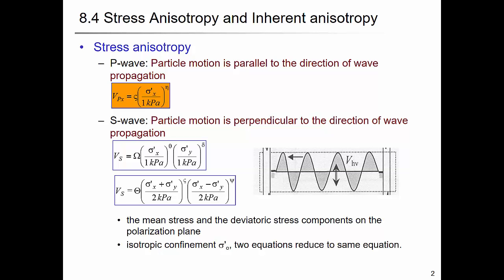Sigma x is the stress applied parallel to the wave propagation direction, and sigma y is the stress acting on the particle movement direction. You have different values for the power exponents theta and delta. You can express this with the mean effective stress - this is the average of sigma x and sigma y - and the second term is the deviatoric stress or shear stress.